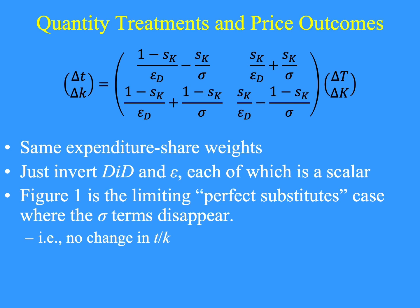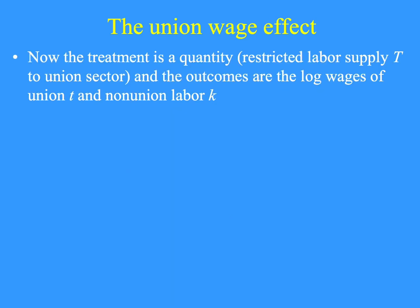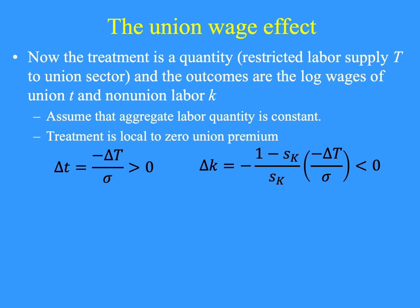For figure one, which assumed perfect substitutes, the sigma terms disappear because sigma is so large — quantity treatments do not change the ratio of the two prices. Because it has price as the outcome, this expression helps in the study of wages, which are prices in the labor market. Let's look at a few wage determination examples. The first is the union wage effect. The union will restrict the supply of labor to its part of the economy in order to increase wages there. The workers unable to be in that sector go to the other sector. That means delta T is negative; delta K is positive and proportional to delta T because the non-union sector is absorbing the reduced T-sector labor.